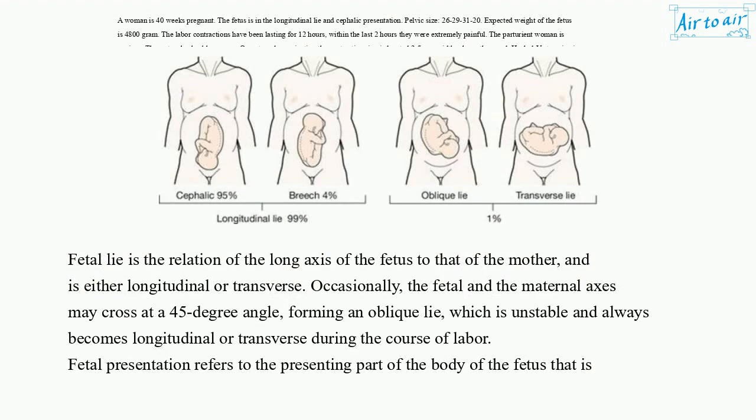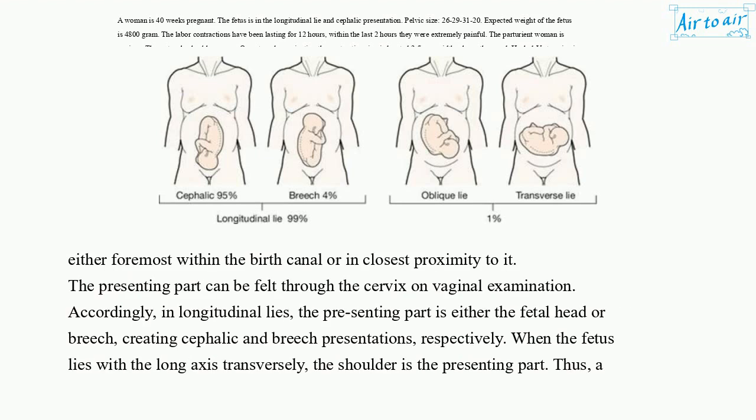Fetal lie is the relation of the long axis of the fetus to that of the mother, and is either longitudinal or transverse. Occasionally, the fetal and maternal axes may cross at a 45-degree angle, forming an oblique lie, which is unstable and always becomes longitudinal or transverse during the course of labor. Fetal presentation refers to the presenting part of the body foremost within the birth canal or in closest proximity to it. In longitudinal lies, the presenting part is either the fetal head or breech, creating cephalic and breech presentations.